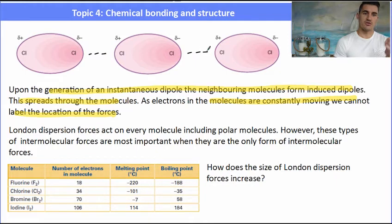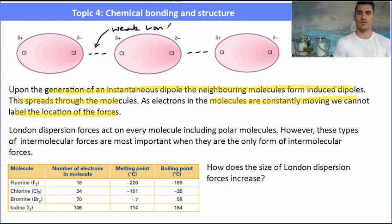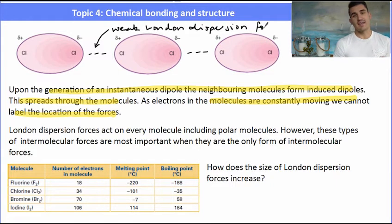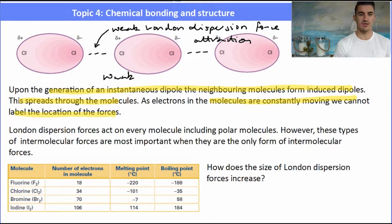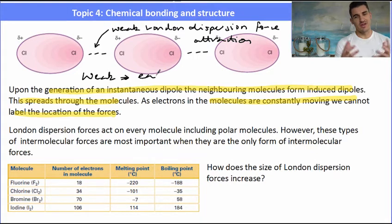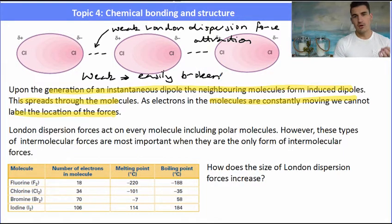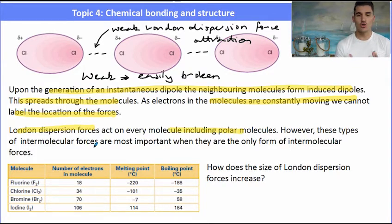The interaction between those induced dipoles — the negative and the positive — gives us our weak London dispersion forces. Because the electrons are always moving, these can shift around, which gives them their weak attraction. Weak meaning they can be easily broken and it doesn't take much temperature to break those bonds. London dispersion forces act on every molecule, but they are the most important type of intermolecular bonding for non-polar molecules — it's the only thing holding non-polar molecules together.